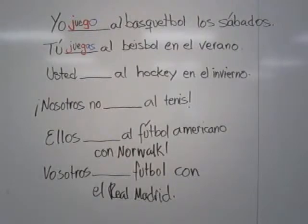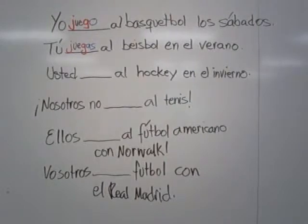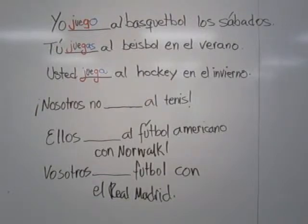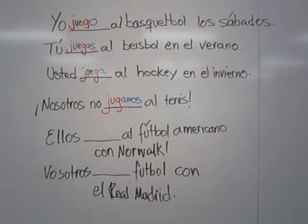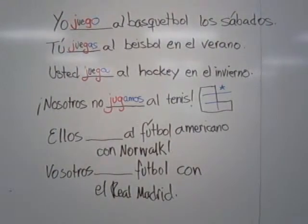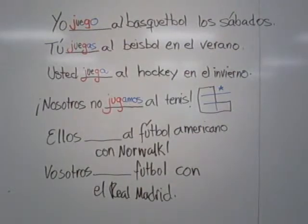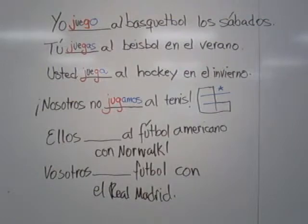Tú juegas al baseball en el verano — you play baseball in the summer. Again, we have the UE change because it's still within the boot. Usted juega al hockey en el invierno — you play hockey in the wintertime. Nosotros no jugamos al tenis. Look — in this one the stem didn't change. The jugamos form is on the upper right of our chart, outside the boot, so it doesn't change.